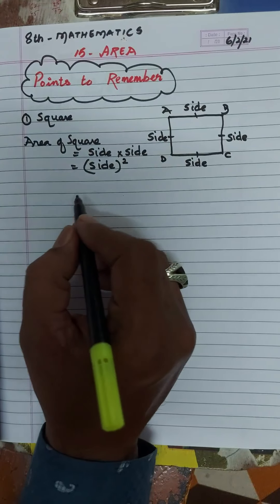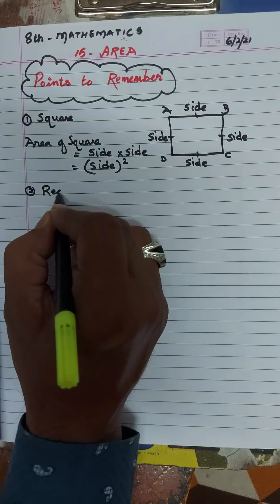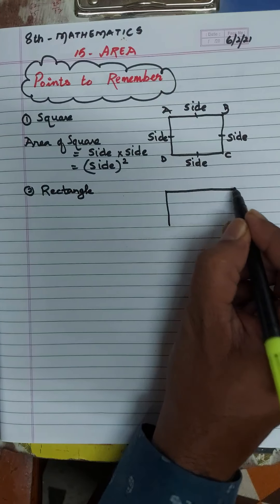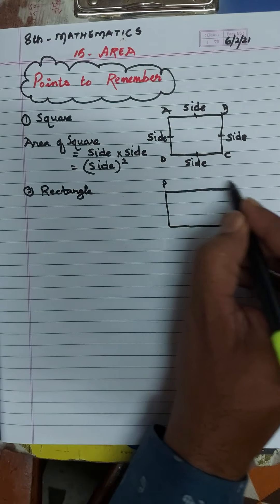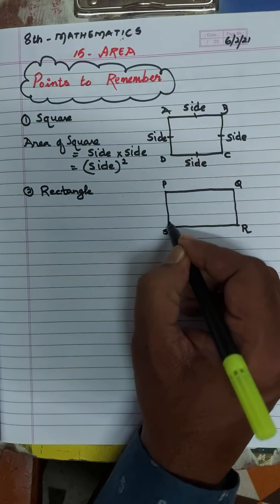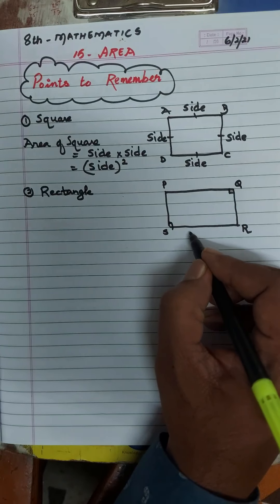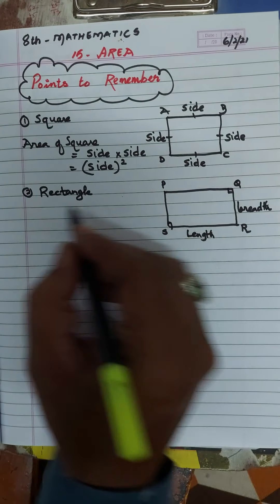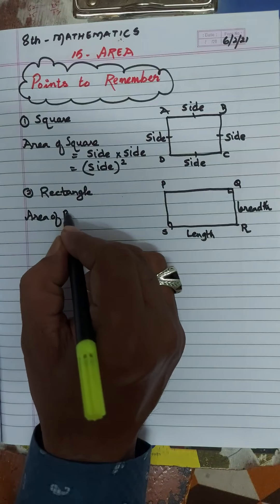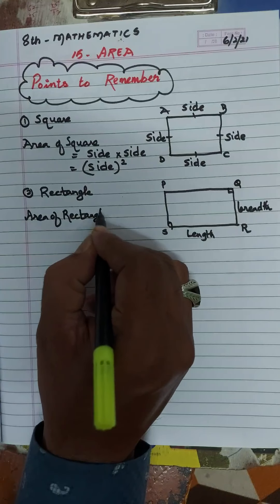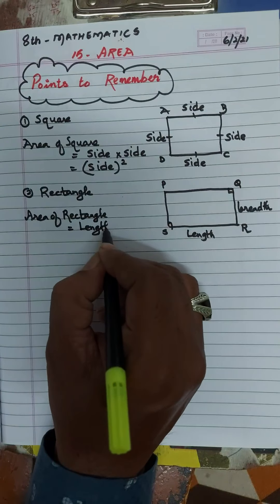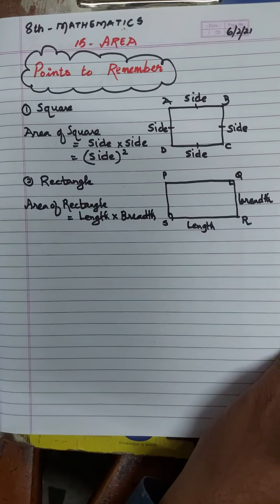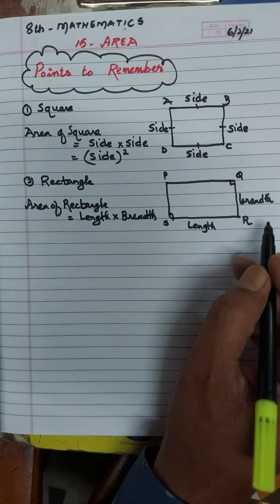The second one is area of a rectangle. Draw a rectangle — suppose this is rectangle PQRS. The property of a rectangle is that opposite sides are equal. Suppose this is the length and this is the breadth. Area of rectangle is equal to length into breadth — L into B. Breadth can also be called width.